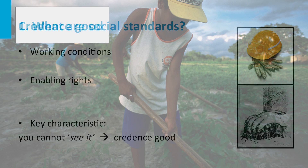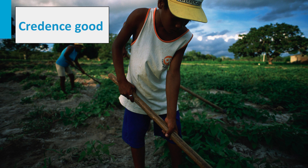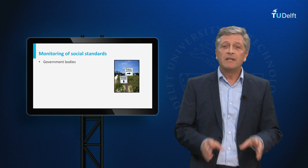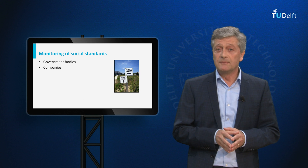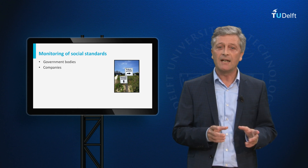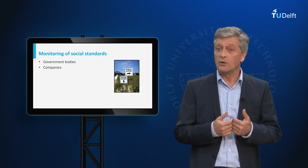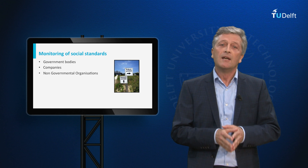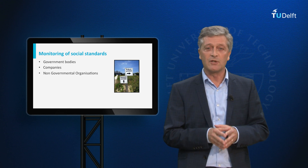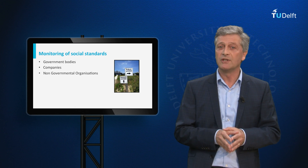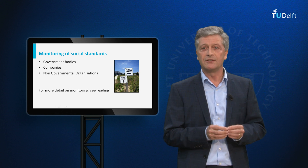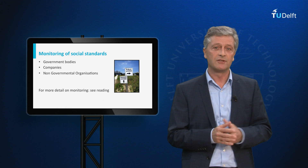A key complicating characteristic of social standards is that you can usually not see them. Take for example child labour. You cannot deduce from a t-shirt that you are buying, or a cup of coffee that you are drinking, whether the processing of that product has included the use of child labour. We call this a credence good, which means that you need to put trust in those who monitor these production processes. This monitoring can be done by government agencies like a labour inspectorate, and sometimes also by companies who wish to operate at a higher level of responsibility by monitoring their own social or ethical standards. It can also be done by non-governmental organisations like fair trade, who monitor for example cooperatives of small farmers on not using child labour.